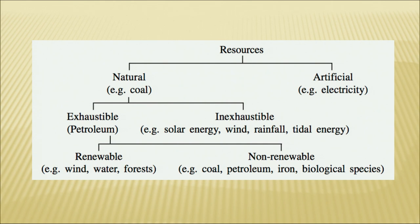If we look at natural resources further, they are also of two types. There are some resources which may get exhausted or completely used at some point in time — that could be today or a thousand years later. A very common example is petroleum. We have the stock today underneath the ground but we may not have it tomorrow. Such resources provided to us by nature but which may get exhausted are called exhaustible resources.